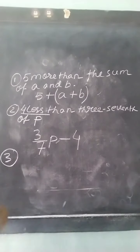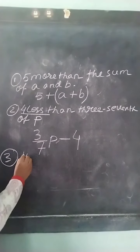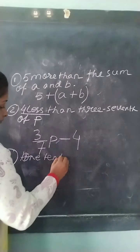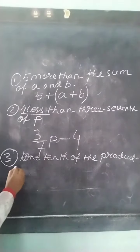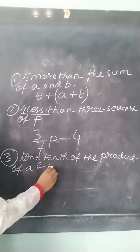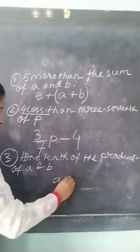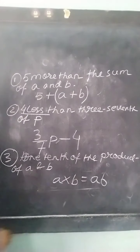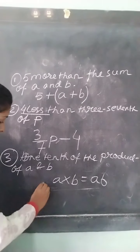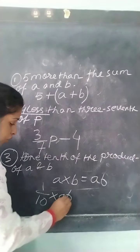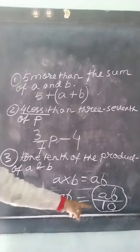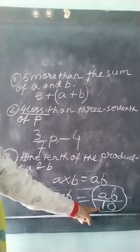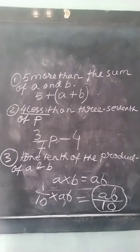Next sum: 1/10th of the product of A and B. Product of A and B means A into B, that is AB. Now 1/10th of AB can be written as 1 by 10 into AB, or it can be written as AB by 10. So the answer is AB by 10 — that is, 1/10th of the product of AB equals AB divided by 10.